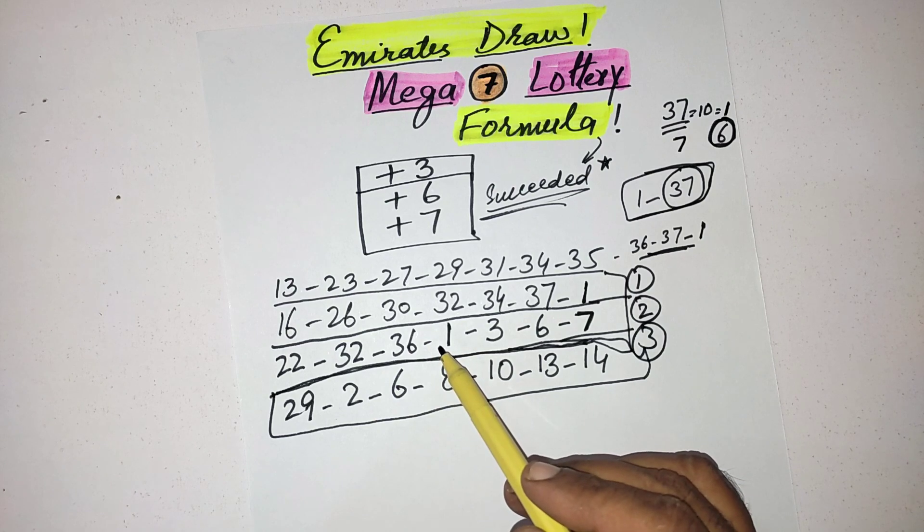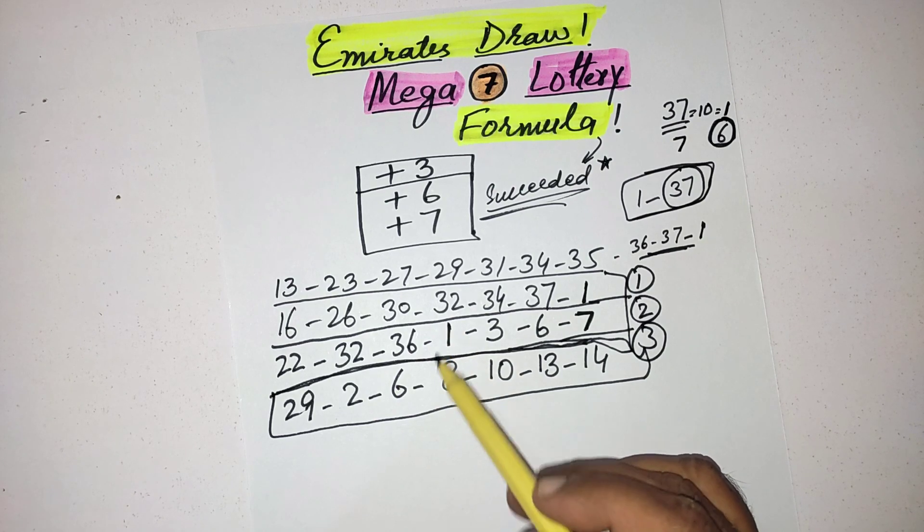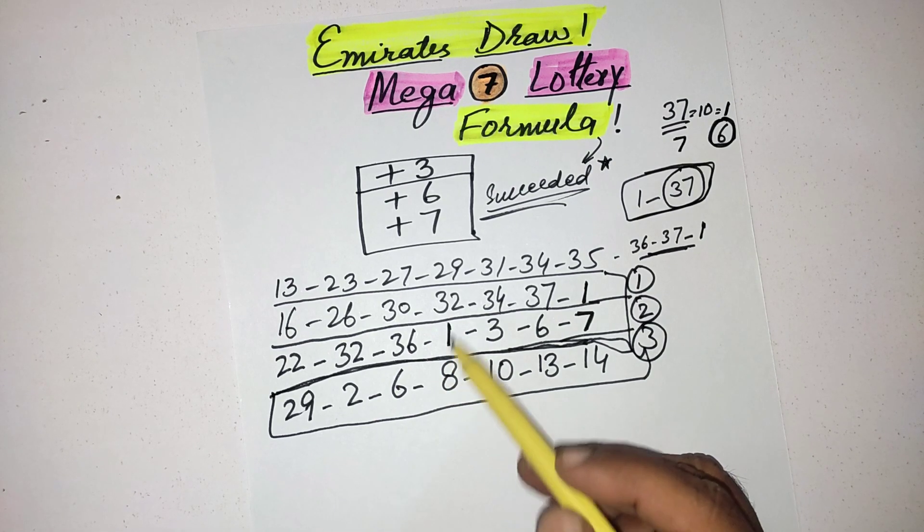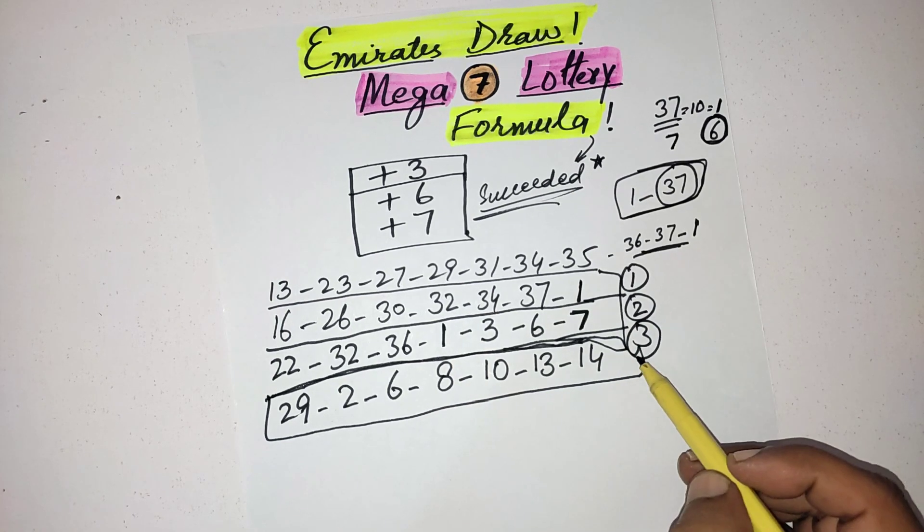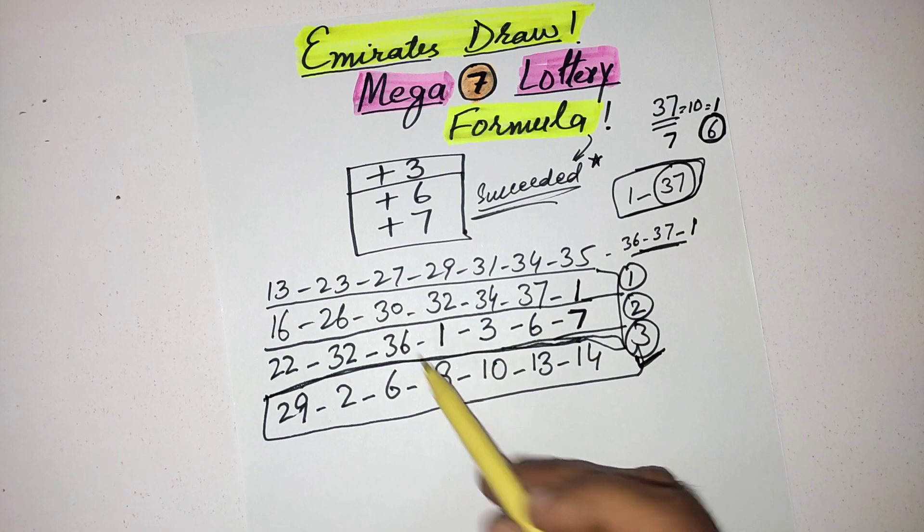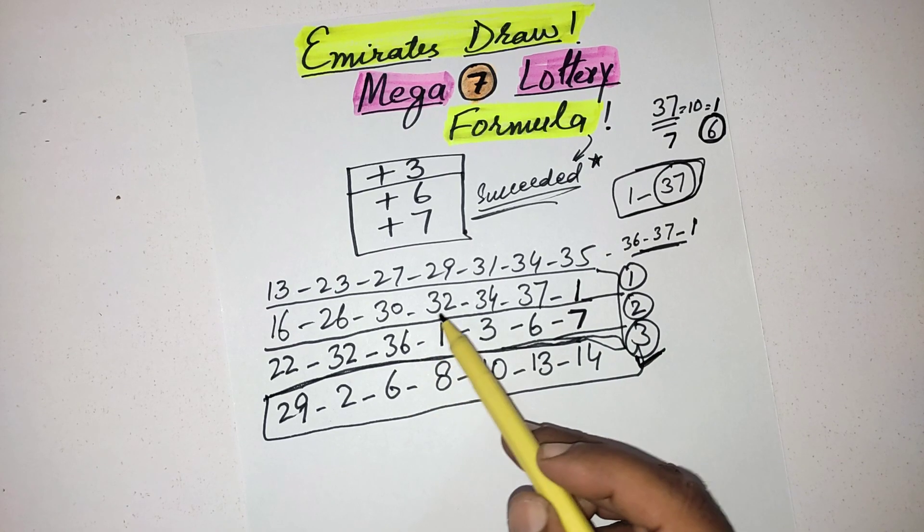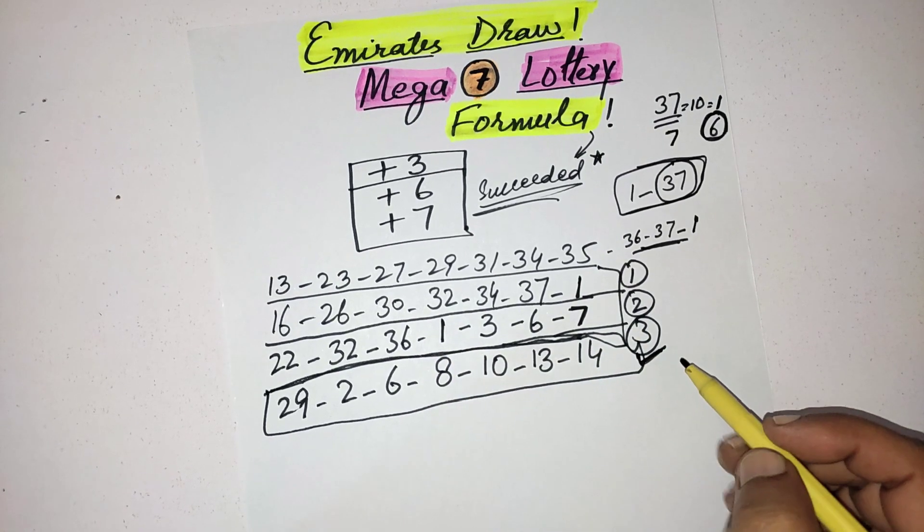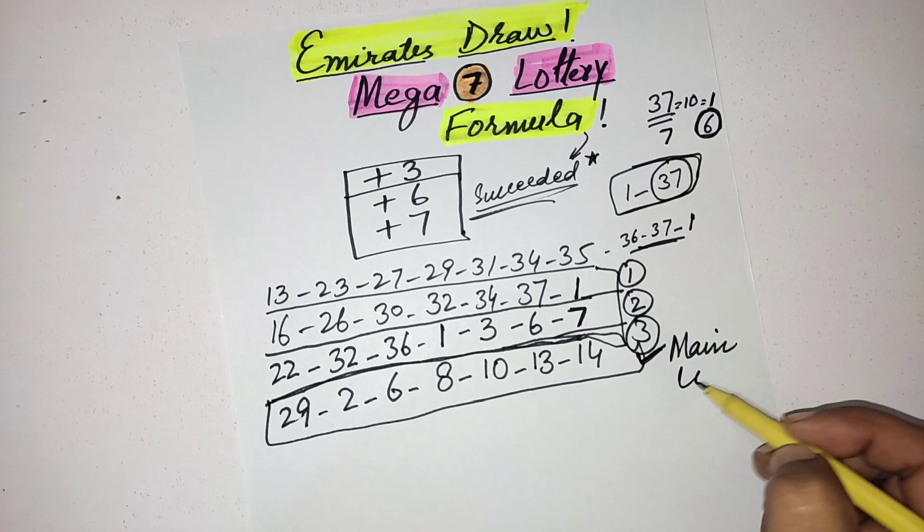And these two lines are supporting. You can also play these three lines, or if you can't buy these three lines then you can also play this one main line, or you can also replace the numbers from these two lines. This is your main line.